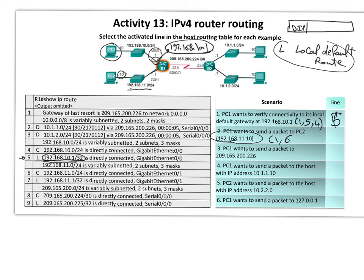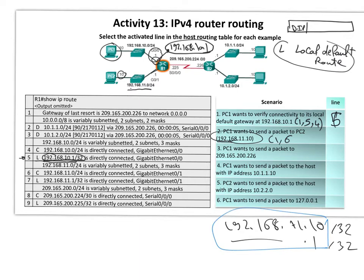32 bits all have to match. The destination address is 192.168.11.10, and the route entry ends in .1 — so there is no exact match for slash 32. Slash 32 is equivalent to 255.255.255.255 — all ones. So the answer is line one and line six match, and we select line six. Next exercise: PC1 wants to send a packet to 209 — with slash 30.